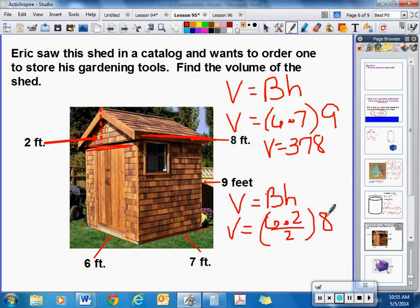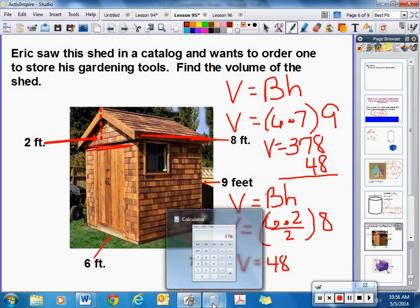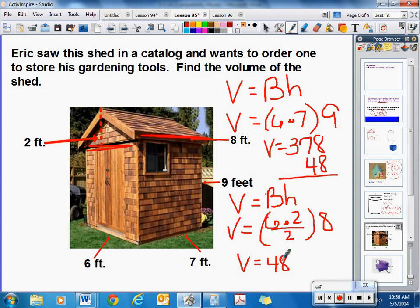So, we have 6 times 2, which is 12, divided by 2 is 6, times 8 is 48 feet. And then if we add those together, 378 plus the 48, it would be 436 cubic feet would be the volume of that shed.